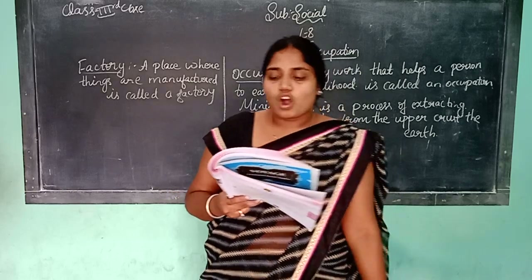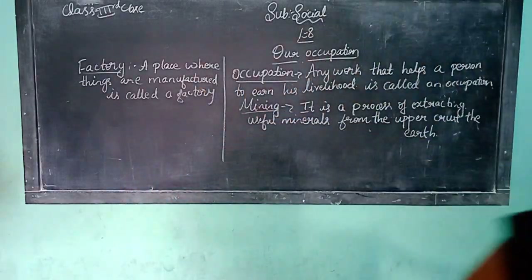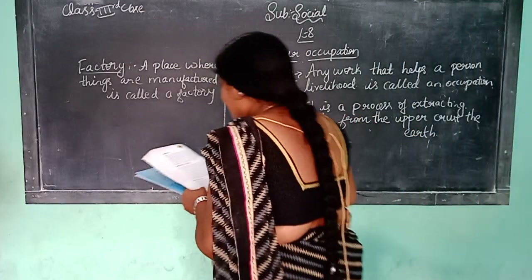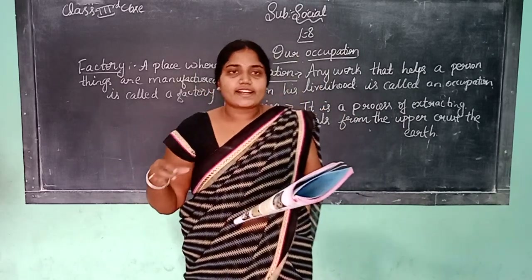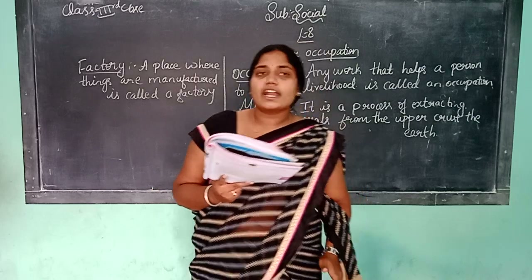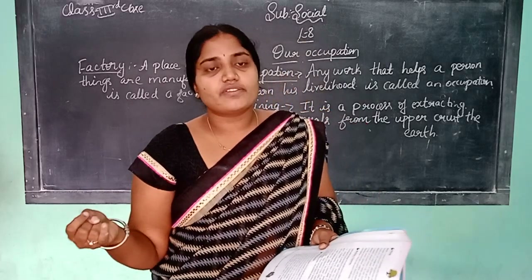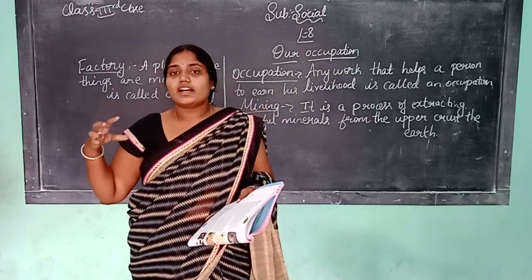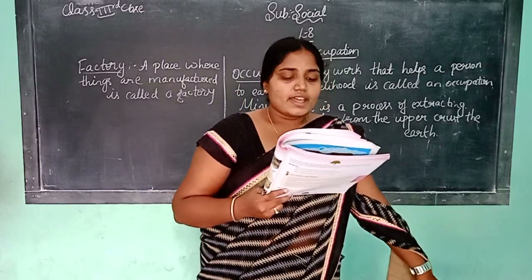Similarly, oil, sugarcane, coffee or tea is grown by farmers and then processed to make coffee powder, tea and sugar. Factories provide work for a large number of people. In a factory there are two types of workers: skilled workers and unskilled workers.